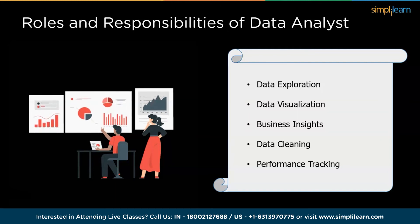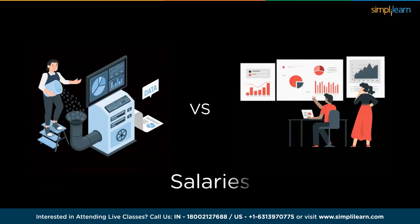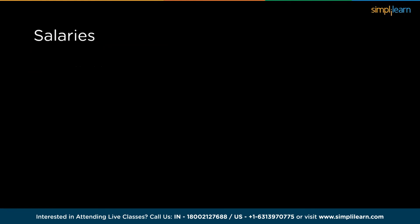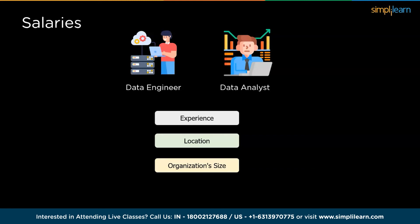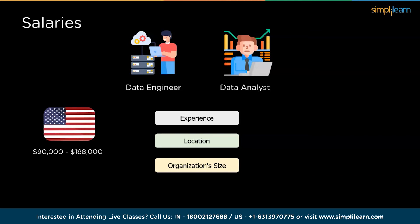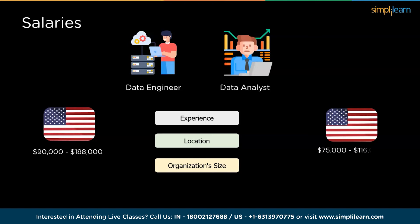Now let's come to the exciting part: data engineer and data analyst salaries. Salaries can vary based on factors such as experience, location, and organization size. Generally, data engineers tend to earn slightly higher salaries than data analysts due to the specialized nature of their role. As of 2021 in the United States, the average annual salary for data engineers ranged from $90,000 to $188,000, while data analysts earned between $75,000 to $116,000. These figures can fluctuate over time and vary across different regions and countries.